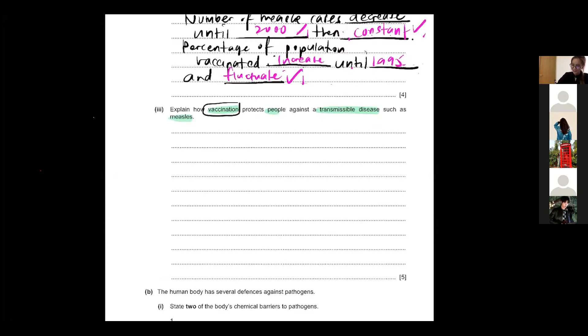Write it down. Explain how vaccination protects people against transmissible disease such as measles. Okay guys, tell me, what is vaccine? What is it? Correct, yes. Weakened pathogen, thank you Jensen. Active immunity, correct. Vaccination is injections of vaccine, which is weakened or dead pathogen. Very good.